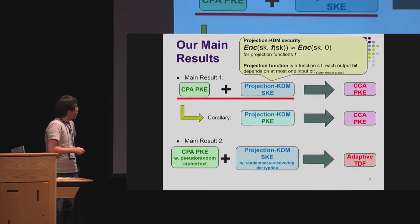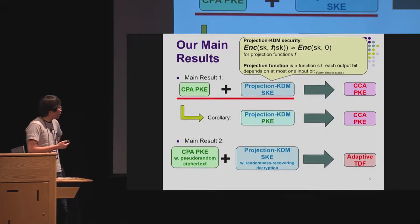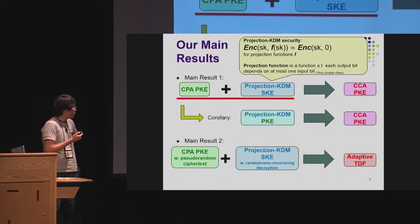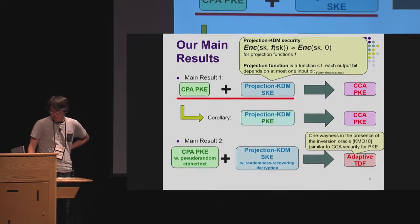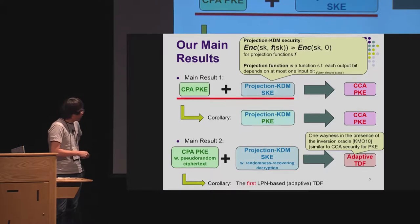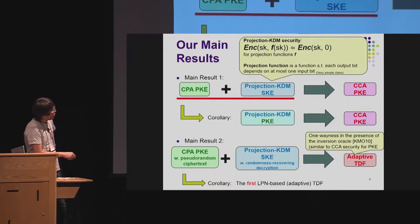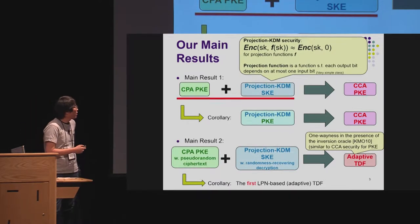The randomness-recovering decryption property essentially requires that in the decryption, not only the message but also the randomness used in the encryption is recovered. From this main result, we obtained the first LPN-based adaptively secure trapdoor function. The adaptive security for trapdoor functions is one-wayness in the presence of an inversion oracle, which is very similar to CCA security for public encryption, and was defined by Kiltz, Mohassel, and O'Neill in 2010.